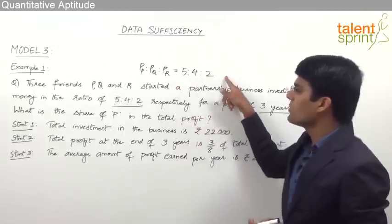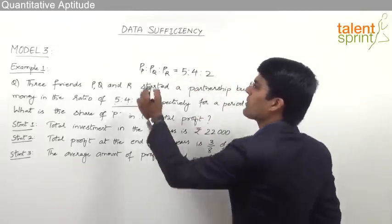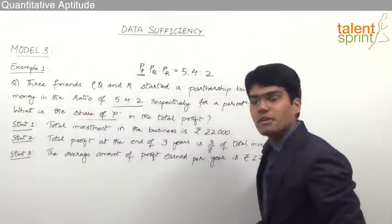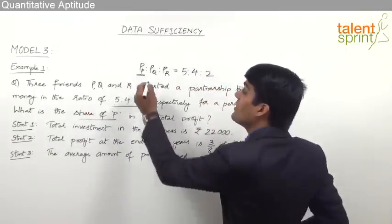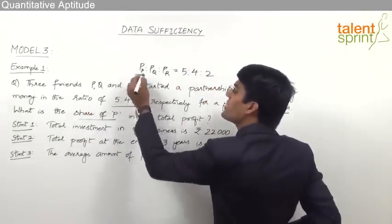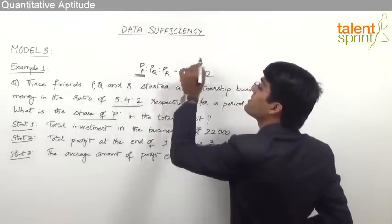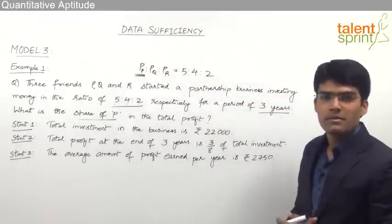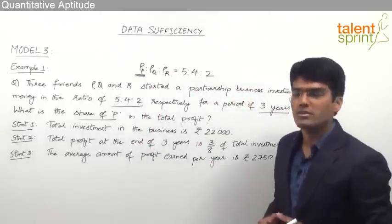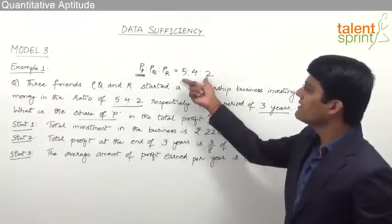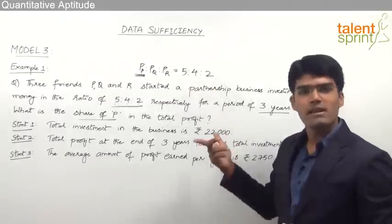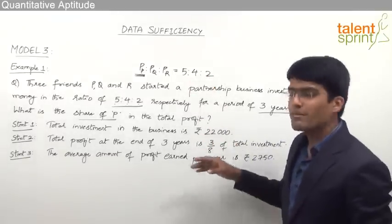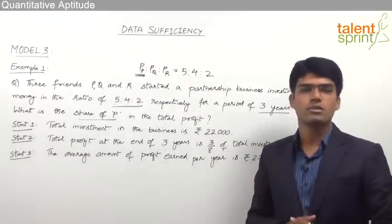Once we have the profit ratio, to find P's share we need to know the total profit earned by all three persons together. Once the total profit is known, we can use the ratio to find individual profits. So let us see which statement gives us the total profit.